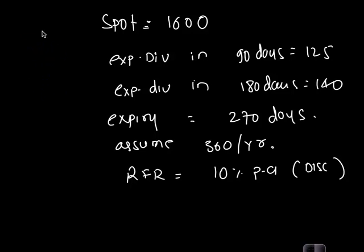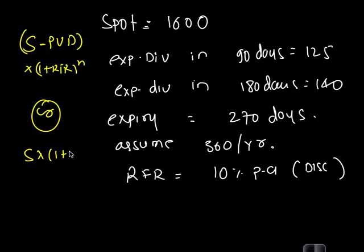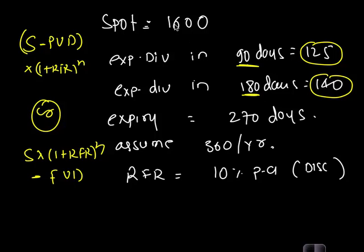How do you do this question? There are two ways. You can say (spot - present value of dividend) × (1 + RFR)^n or spot × (1 + RFR)^n - future value of dividend. Both ways will get you the same answer. Take present value of 125 for 90 days, present value of 140 for 180 days, reduce those from 1600 and take future value for 270 days. The answer is 1443.